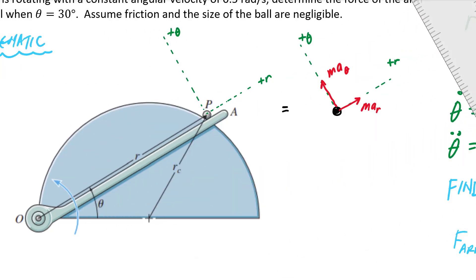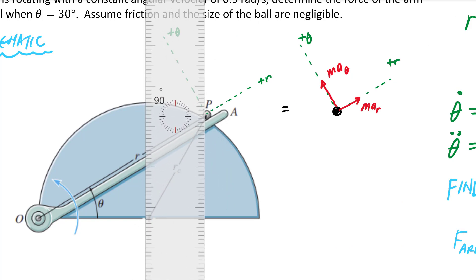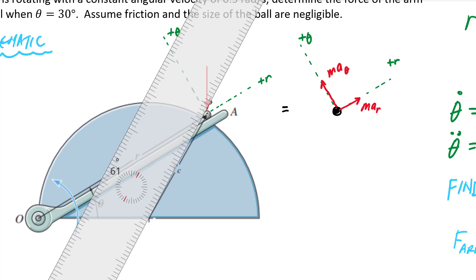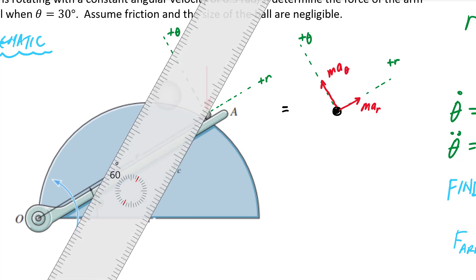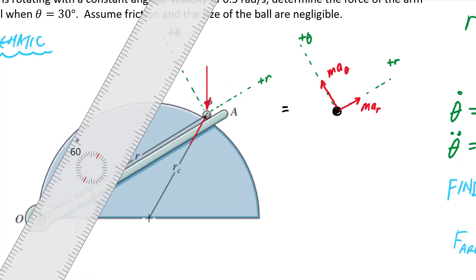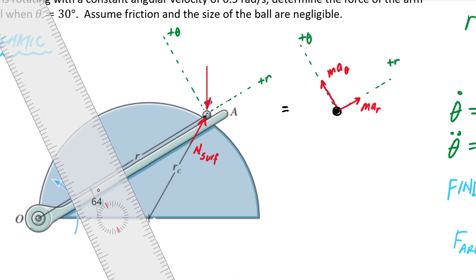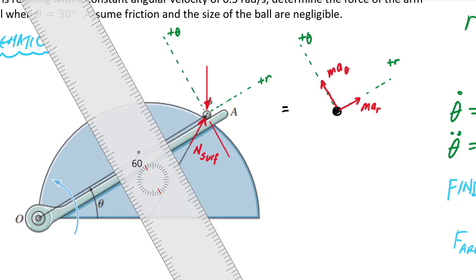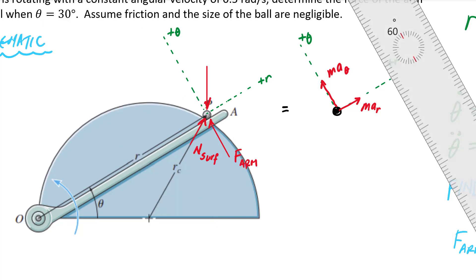Now I need to figure out the forces acting on my particle at point P. I know there's a weight due to the mass acting straight down in this vertical plane. I also have a normal force from the surface — because this is a circular surface, the normal force points from the center of the circle toward the outer radius. And from the arm, the force is perpendicular to the arm OA, which puts it in the transverse direction. This is F_arm.